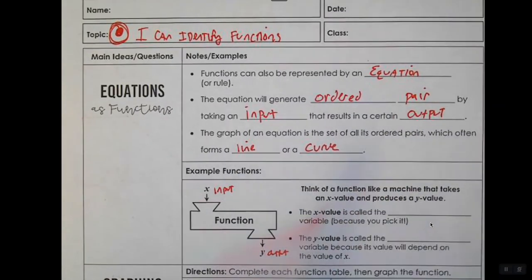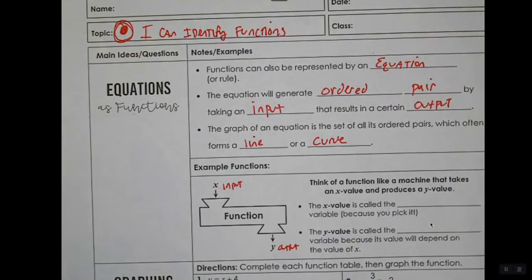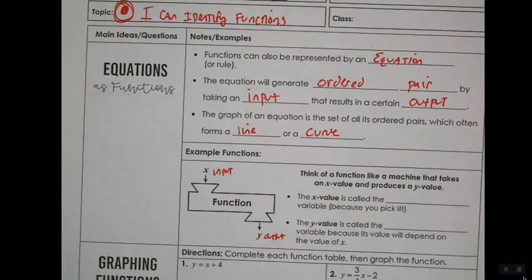Usually the graph of the equation is a set of all its ordered pairs. So you plot all those points and this often forms a line or a curve.